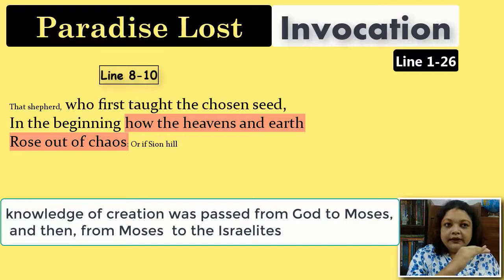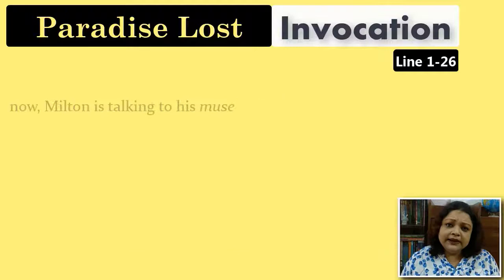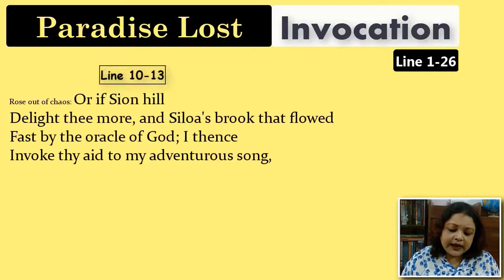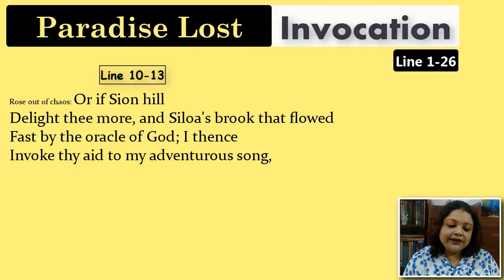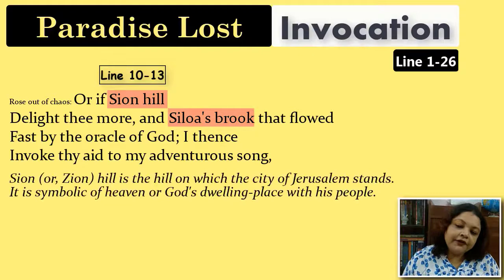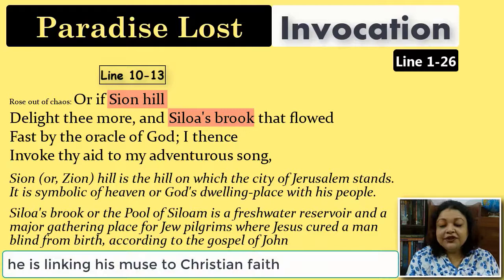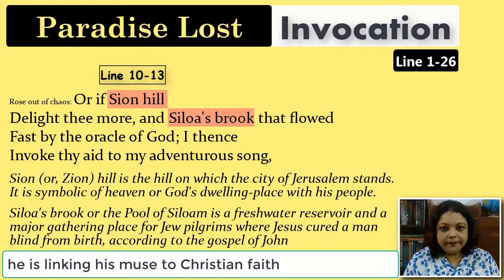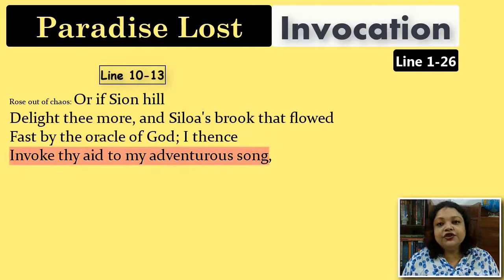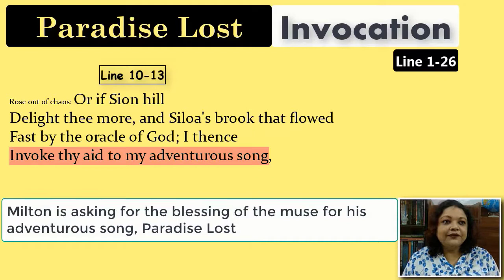Milton continues: 'Or if Zion hill delight thee more, and Siloa's brook that flowed fast by the oracle of God, I then invoke thy aid to my adventurous song.' He references Zion hill and Siloa's brook — biblical places — to link his muse directly to the faith of Christianity. He calls his poem an adventurous song, as if embarking on a journey that requires blessings to go on smoothly.